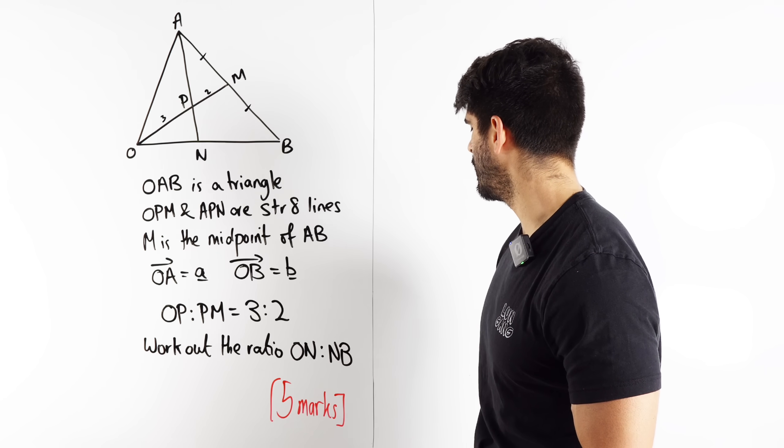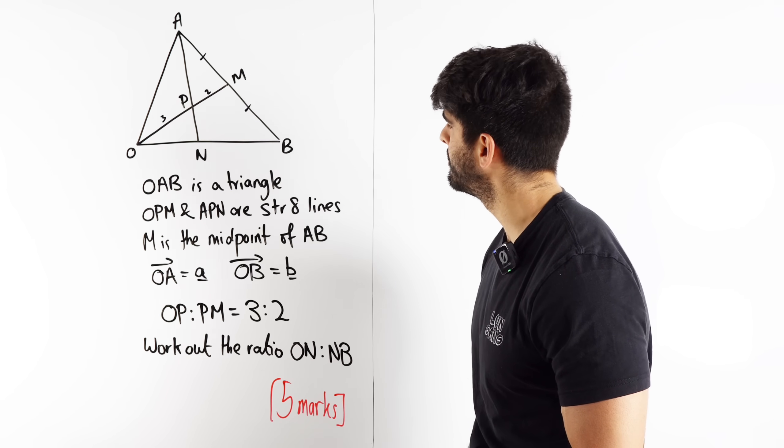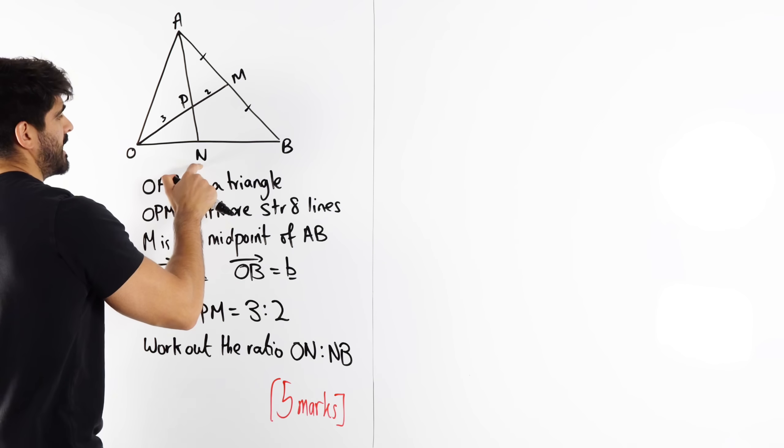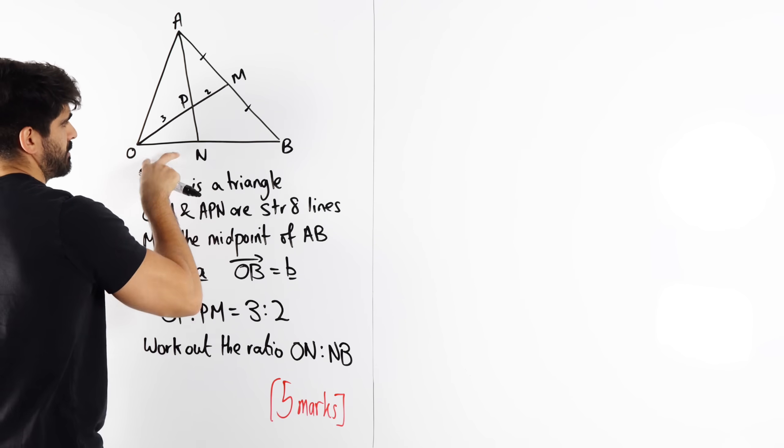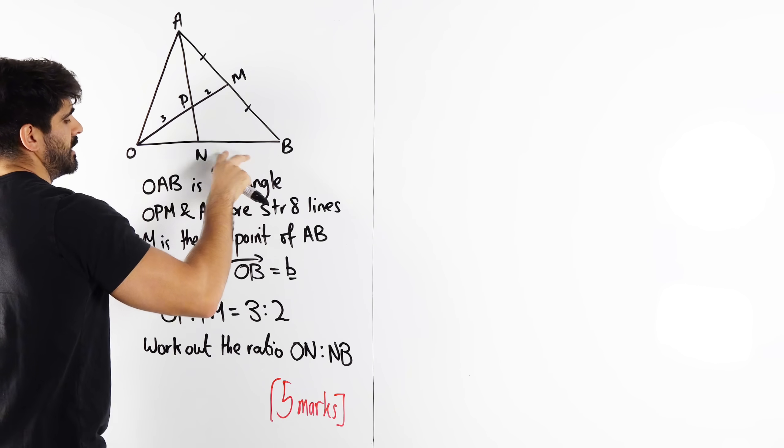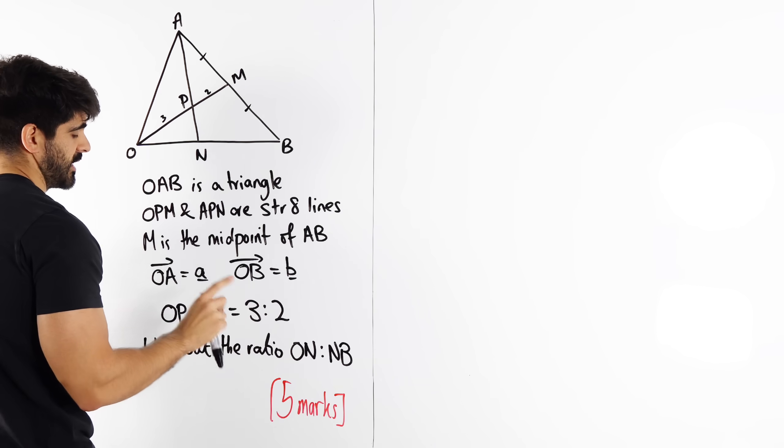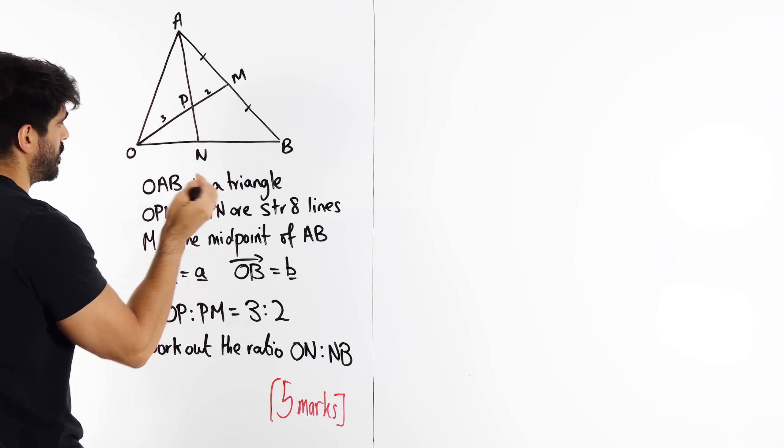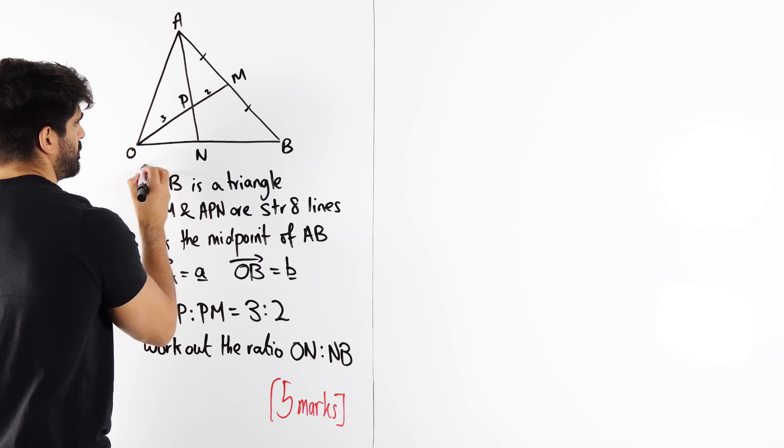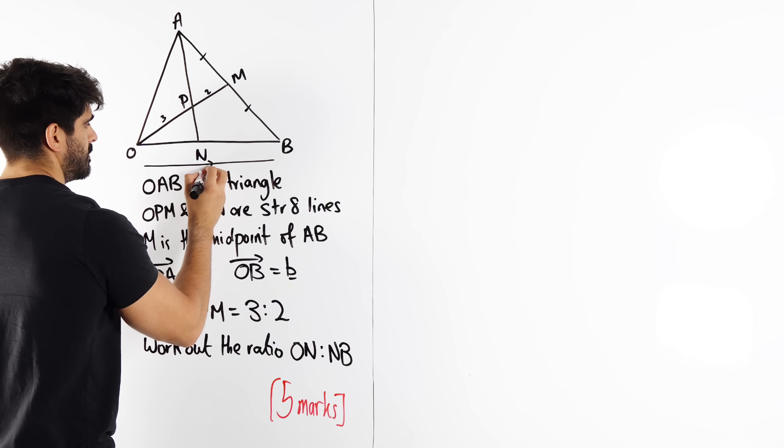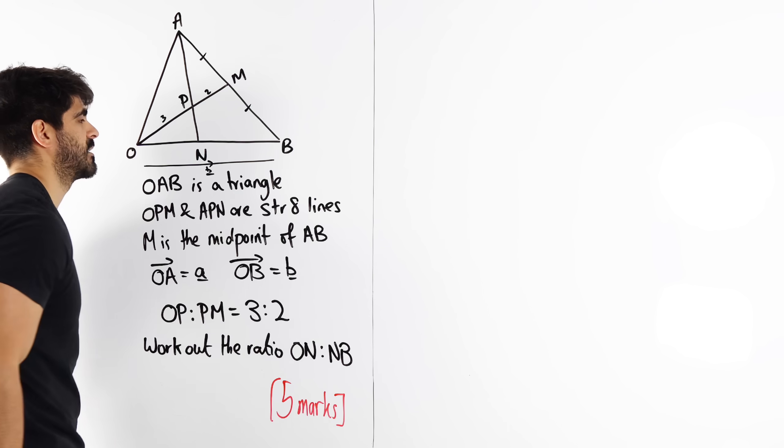Work out the ratio ON:NB. So work out how much N splits up this line. Now one thing about this is we know the vector OB, but we don't know how this is partitioned, so I'm going to put B here just so I don't mess up the diagram.